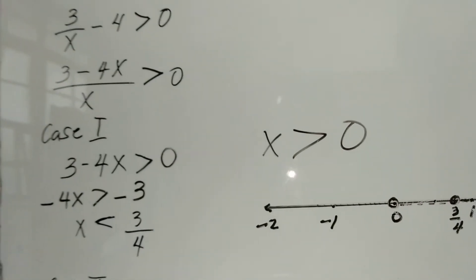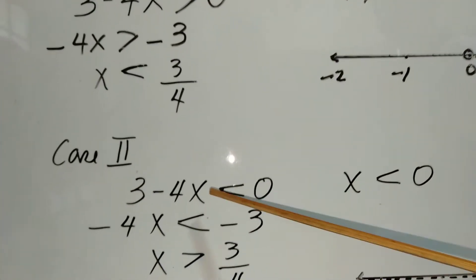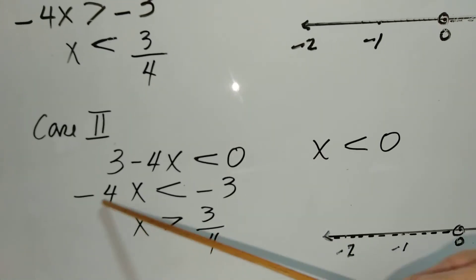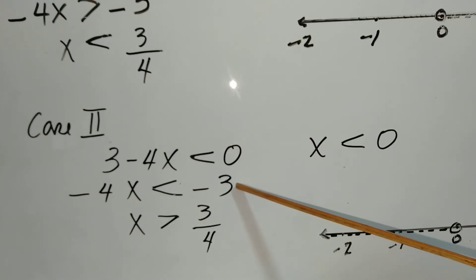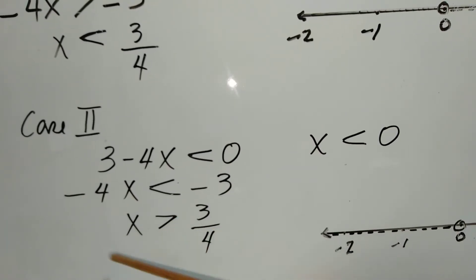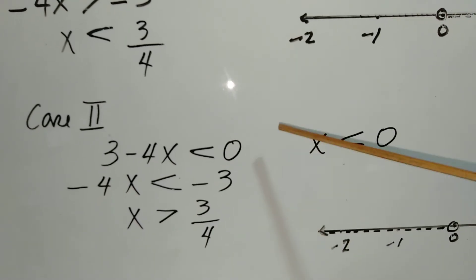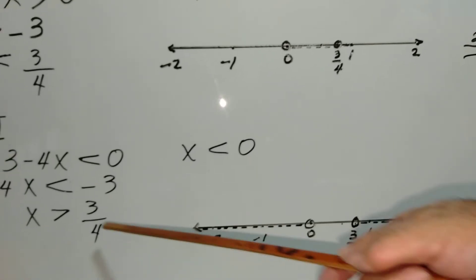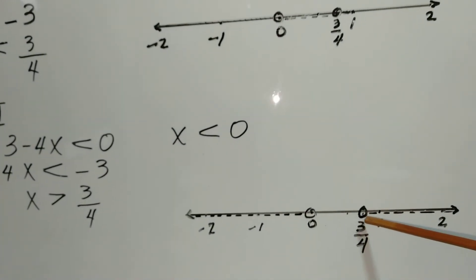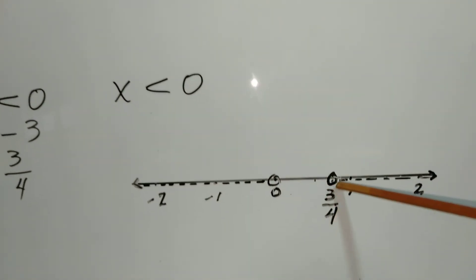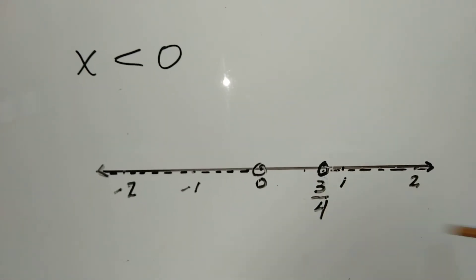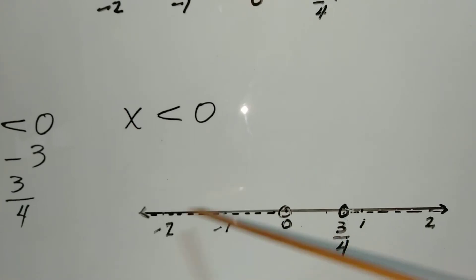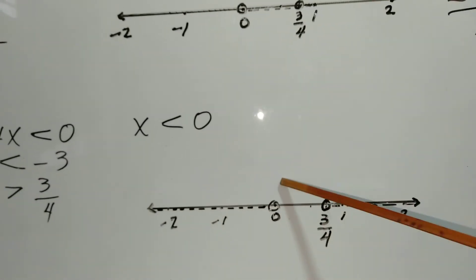We check Case 2, where 3 minus 4x is less than 0. Transposing 3 gives negative 4x is less than negative 3. Dividing by negative 4 and changing the sign gives x is greater than 3/4. The denominator condition here requires x is less than 0. Graphing these: x greater than 3/4 goes to the right toward infinity, while x less than 0 goes to the left toward negative infinity. As you can see, Case 2 has no intersection.